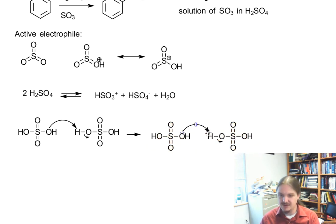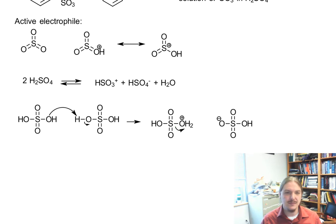We get an acid-base reaction between two molecules of sulfuric acid. This generates the hydrogen sulfate anion, it generates a protonated sulfuric acid that looks like it might be ready to undergo loss of leaving group, which will then generate the active electrophile.